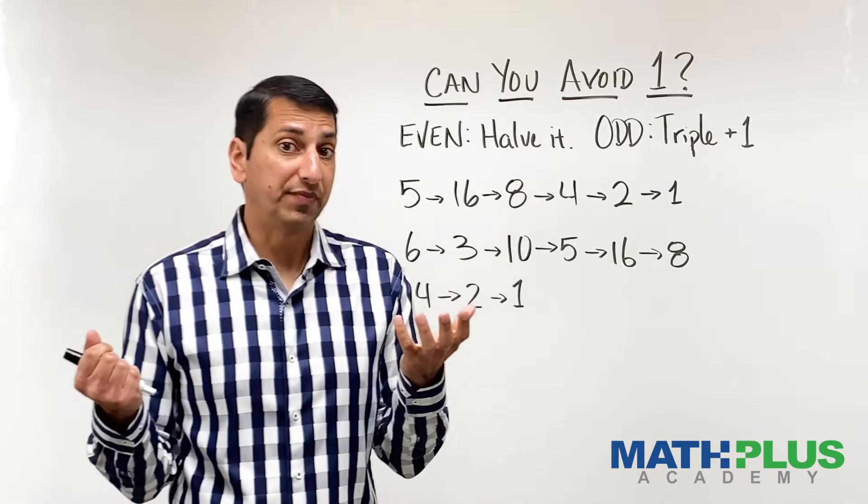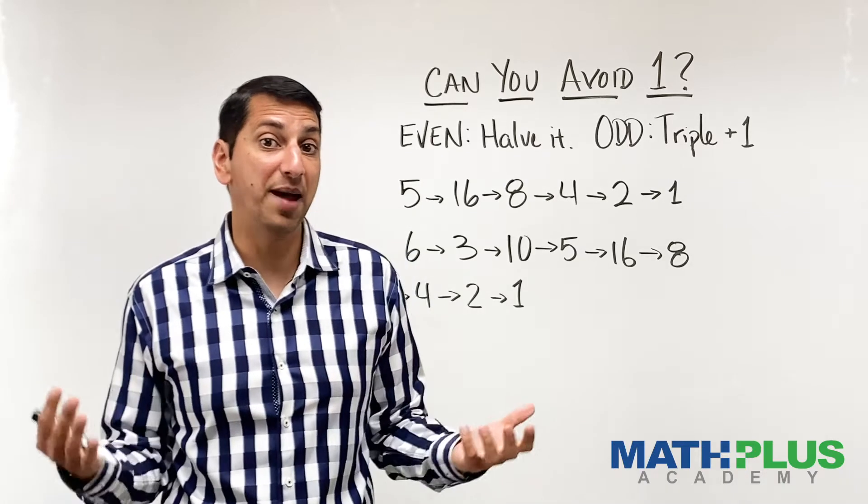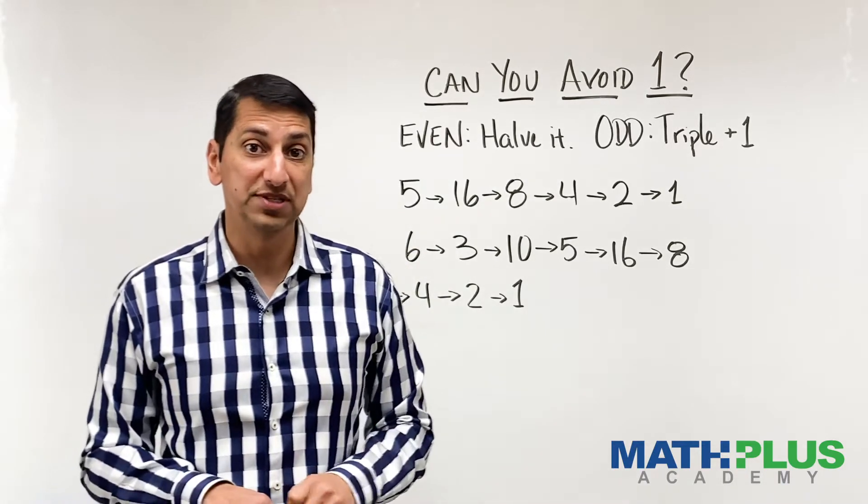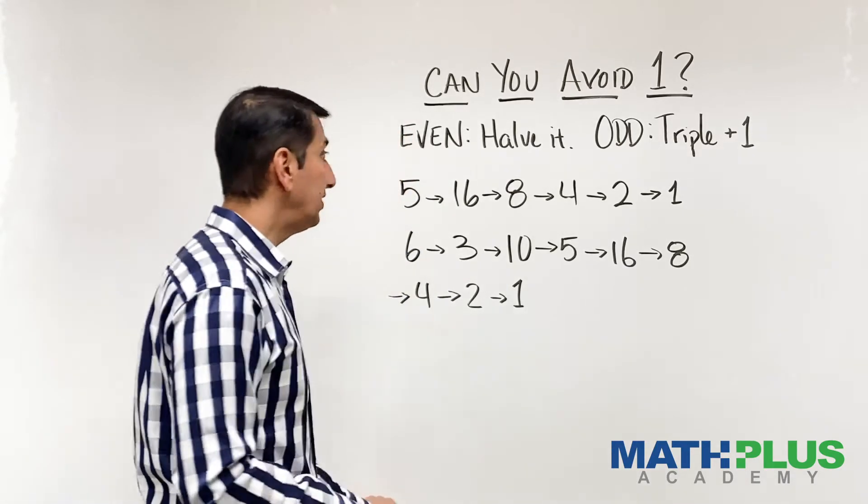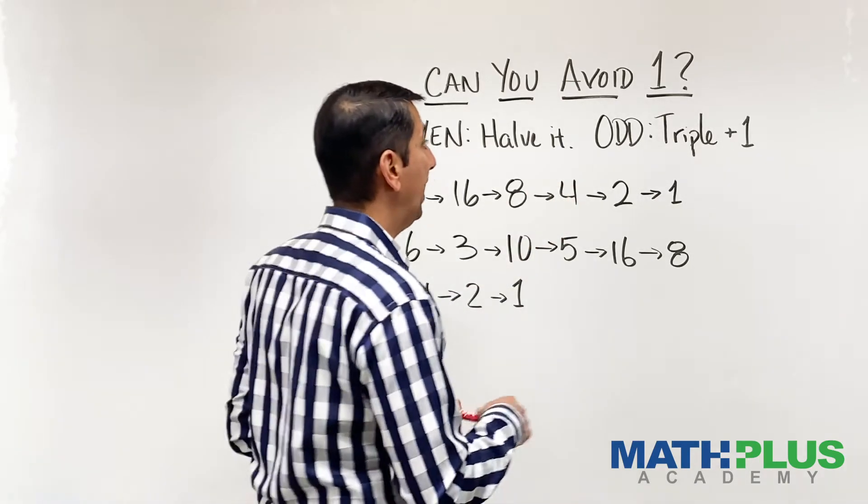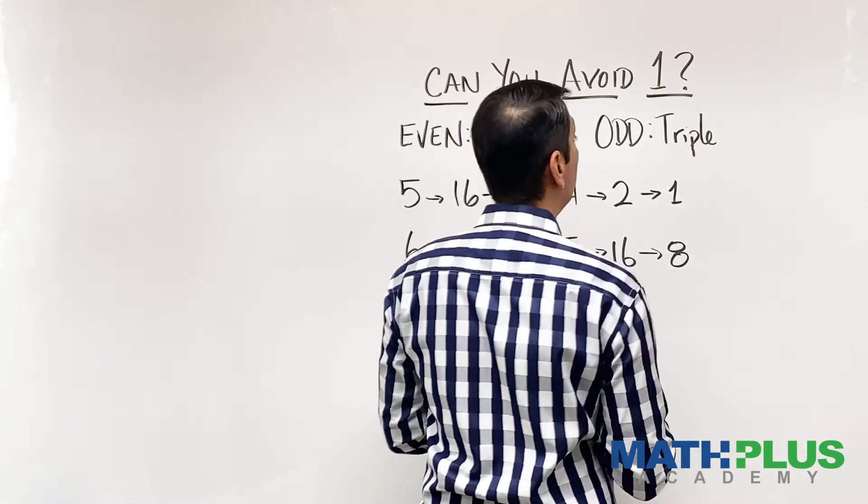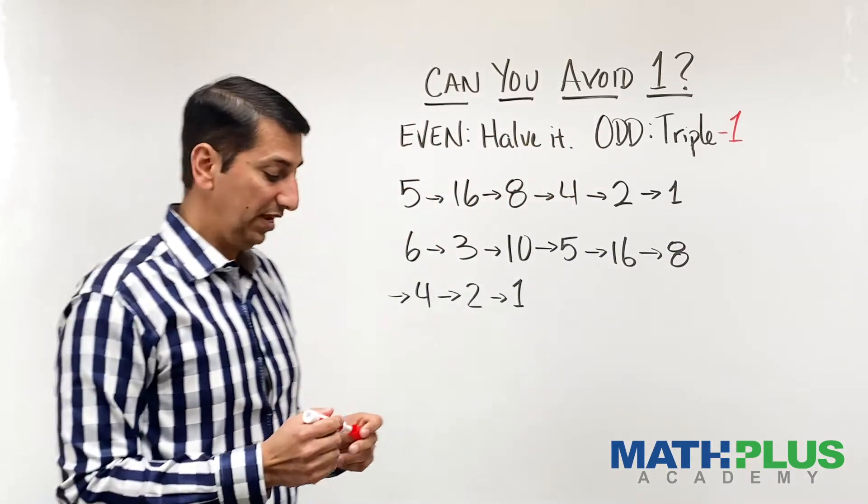Now, I want to show you a different example just so you could see another example of what could happen. We're going to change the rules and investigate a slightly different thing. So now imagine that I change the rule. Instead of triple and add one, I'll make it triple and subtract one. And we'll see what happens.